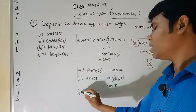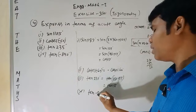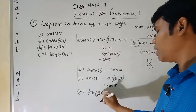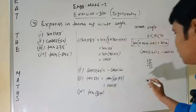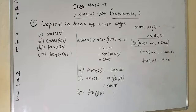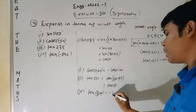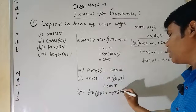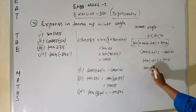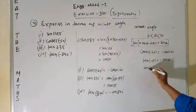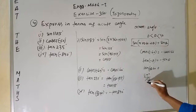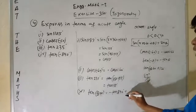The last one is tan(−840°). We know that tan(−θ) = −tan(θ). So this becomes −tan(840°). Now 840° = 2×360° + 120°, since 2×360 = 720 and 840 − 720 = 120.